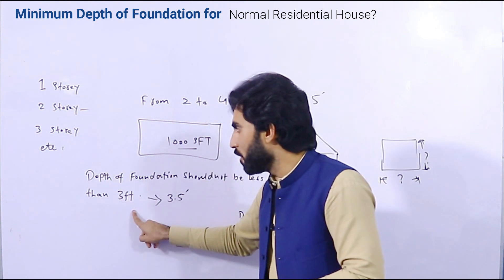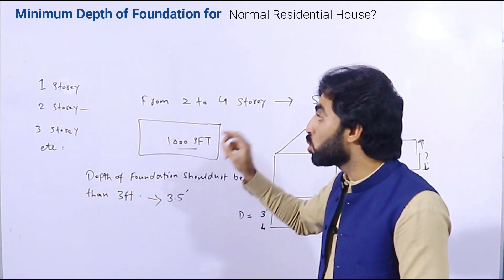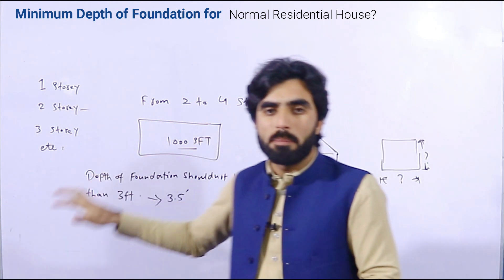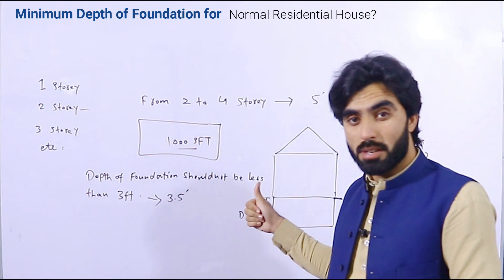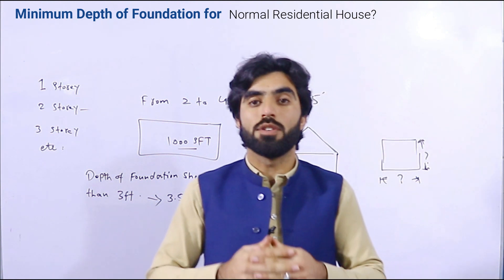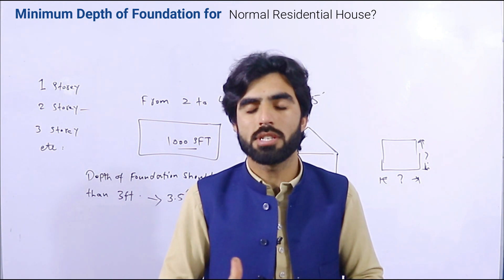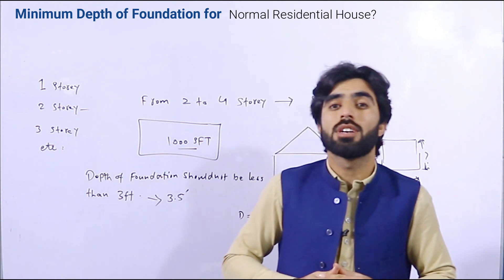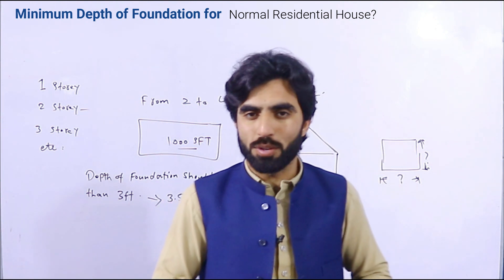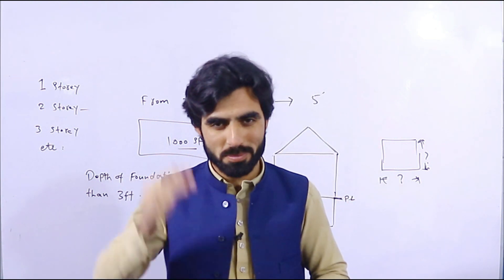For one story, minimum three feet. For two story, minimum four feet. From two to five story, minimum five feet. If you don't believe this, then you should hire a structural designer to give you a design for beams, columns, slabs, foundation, and stairs. This is a short video in which I have discussed what should be the minimum depth of foundation for a normal residential house. Thanks for watching, see you in the next video, goodbye.